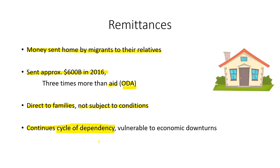Also, if there is a recession in the rich country, that's the biggest hit to migrant workers — they won't be able to find as many jobs. Illegal immigration decreased dramatically during the recession because of fewer available jobs.